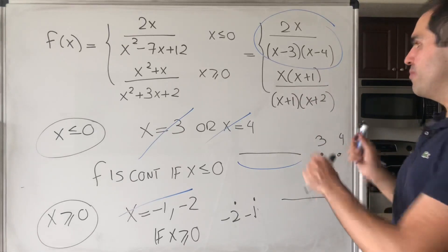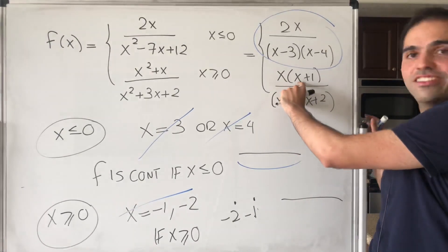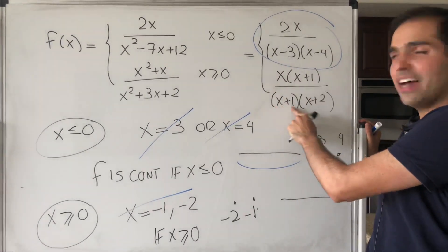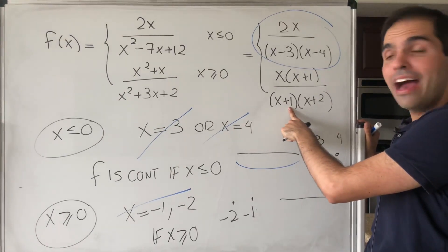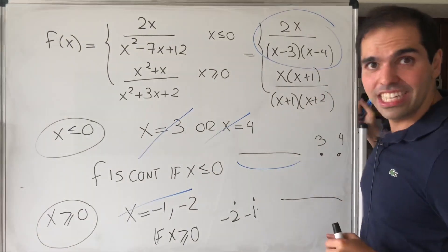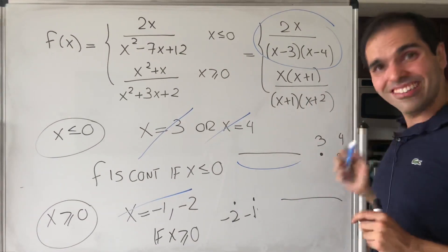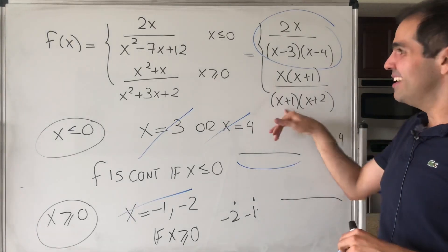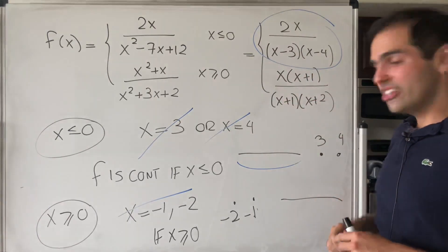And by the way, just side remark, why didn't I just cancel this out? Because sometimes those values do matter. So if x were negative, you can't just cancel out and say it's just discontinuous at minus 2. You would also have to consider minus 1. But here we're kind of lucky that we don't need to do that.